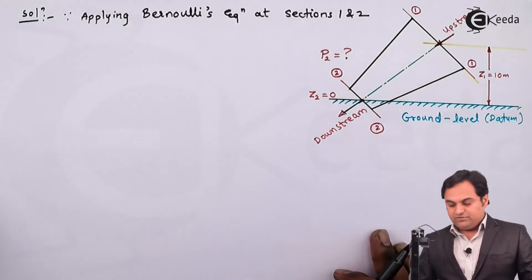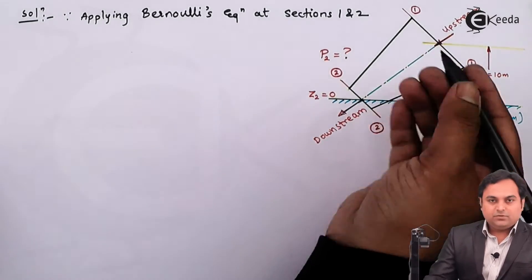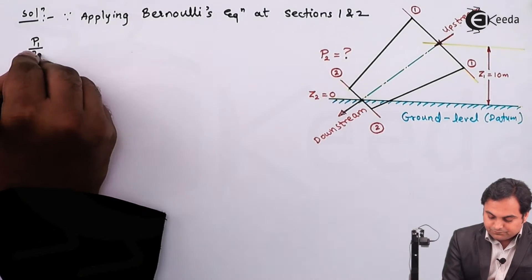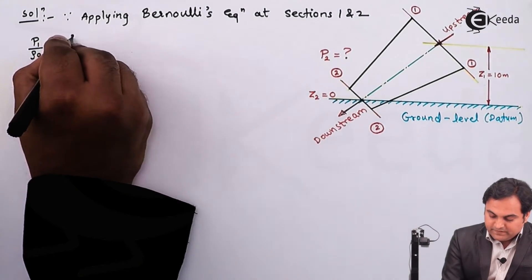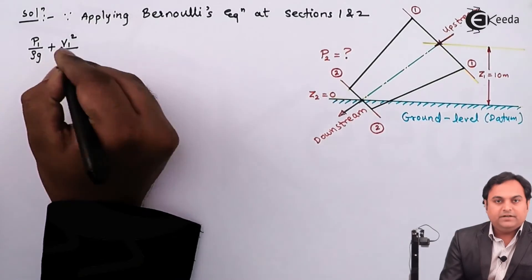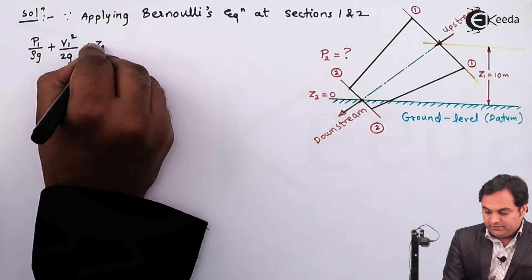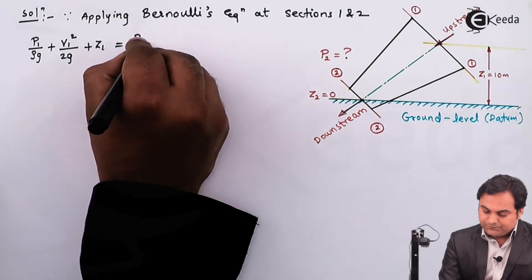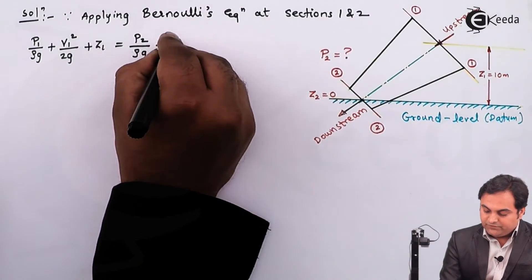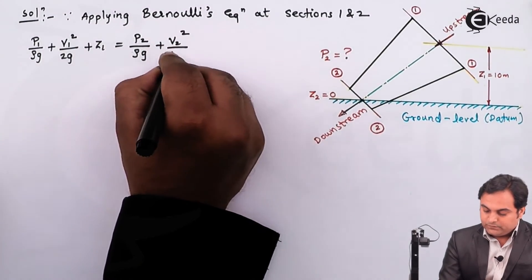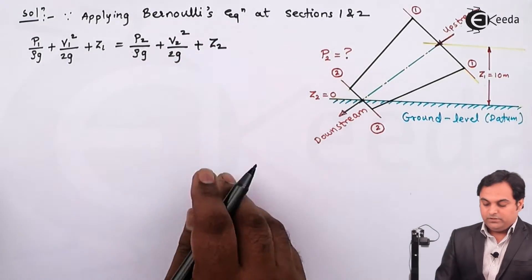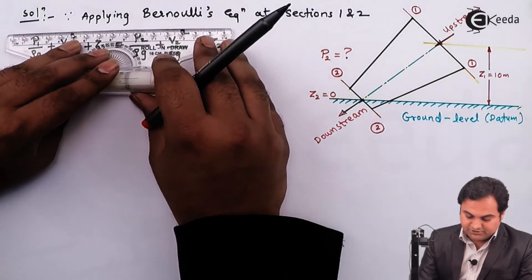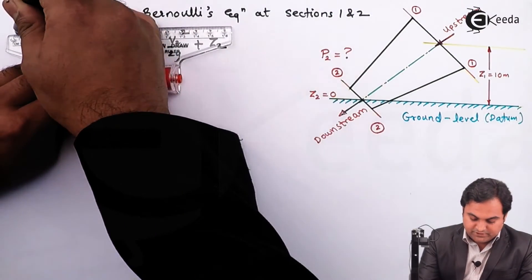Applying Bernoulli's equation at sections 1 and 2: at section 1 we have p1/(ρg) as the pressure head, plus v1²/(2g) as the kinetic head, plus z1 as the potential head. Similarly at section 2: p2/(ρg) + v2²/(2g) + z2. This is Bernoulli's equation without any losses, as frictional effects have been neglected in the question.